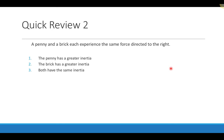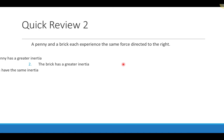In another review question: a penny and a brick each experience the same force directed to the right. Which has greater inertia? The force applied has nothing to do with inertia. Inertia is based on an object's resistance to change and is measured by mass. A penny has a very small mass compared to a brick. The larger the mass, the larger the inertia, so the brick has greater inertia.